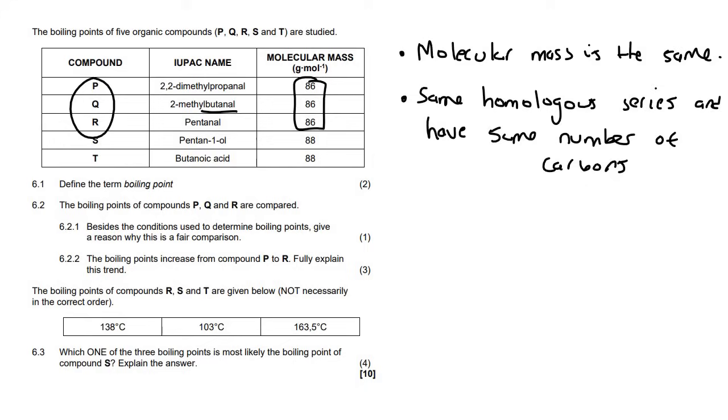This one here is a butanil, which is four carbons. But then it also has a methyl group. So that's another one carbon. So this one also has five carbons. And then pentanil just has five carbons. So they all have the same amount of carbon.